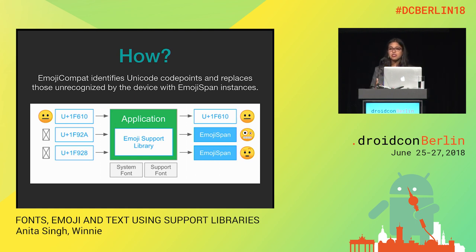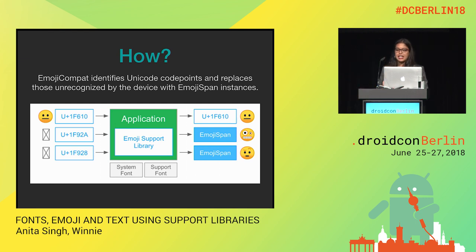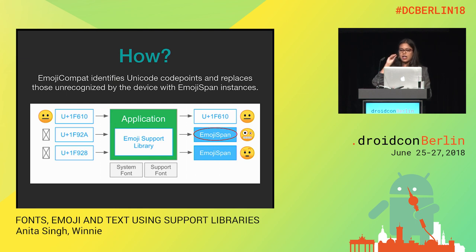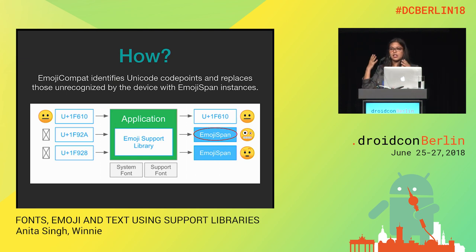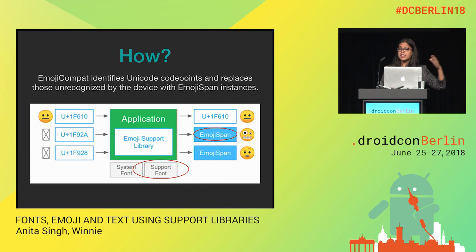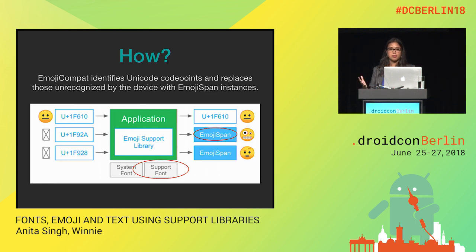How does EmojiCompat work? Emojis are represented by Unicode code points. What EmojiCompat does is identify the Unicode code points that represent emojis and check if the system can render them. If it can, great. If it can't, it replaces the Unicode code point with something called EmojiSpans. EmojiSpans are replacement spans, and replacement spans can replace character sequences with any customization. In this case, EmojiSpan has an emoji metadata object which has information to render the emoji glyph using the support font. Using this EmojiSpan replacement technique and the support font, EmojiCompat provides backwards compatible emoji support across operating systems.